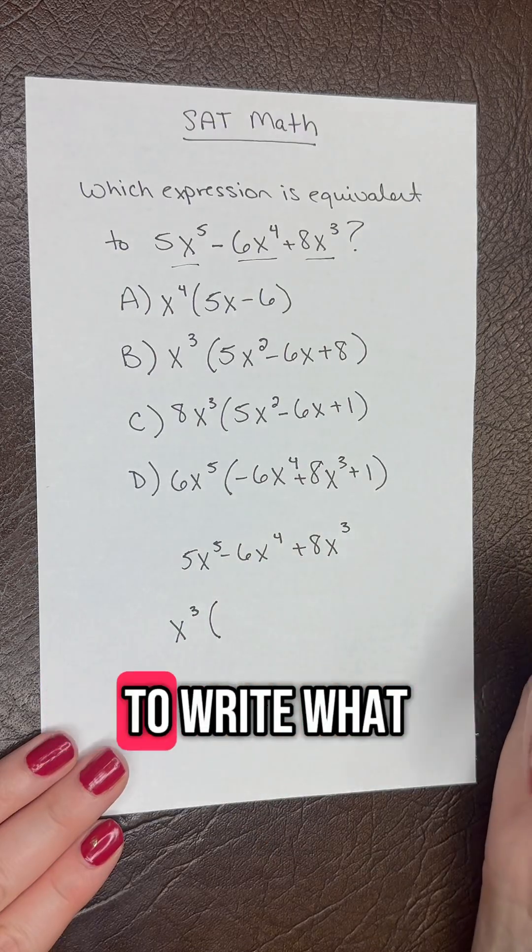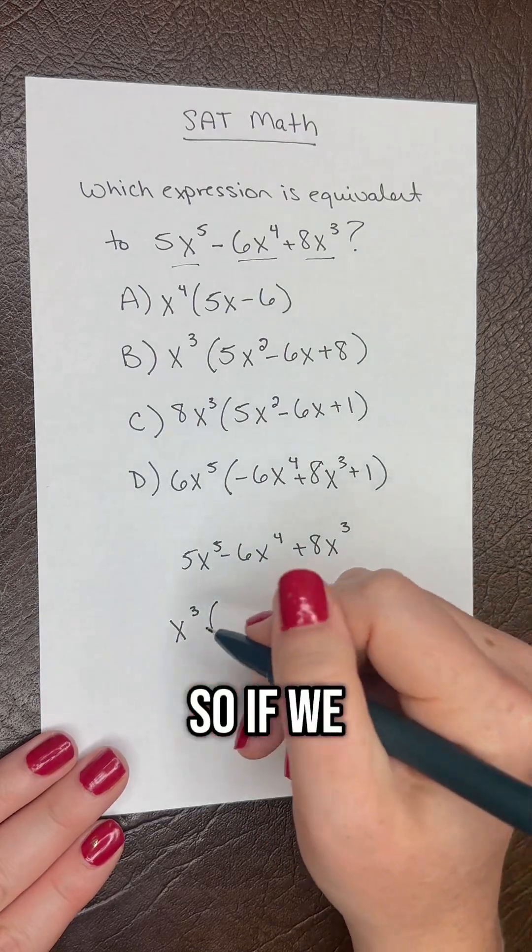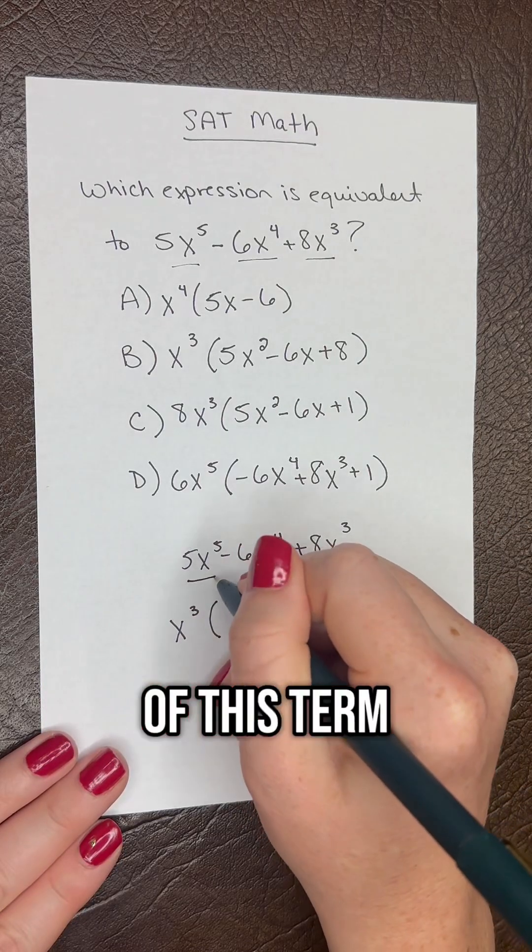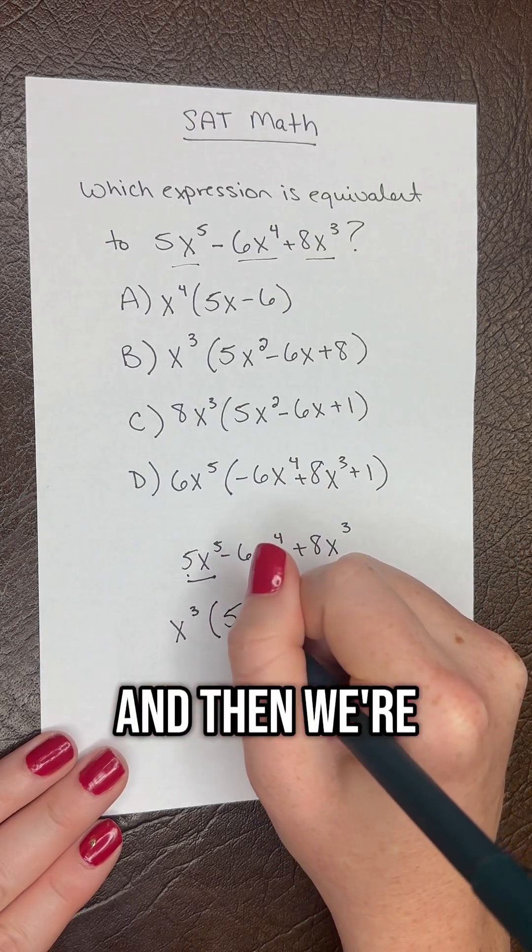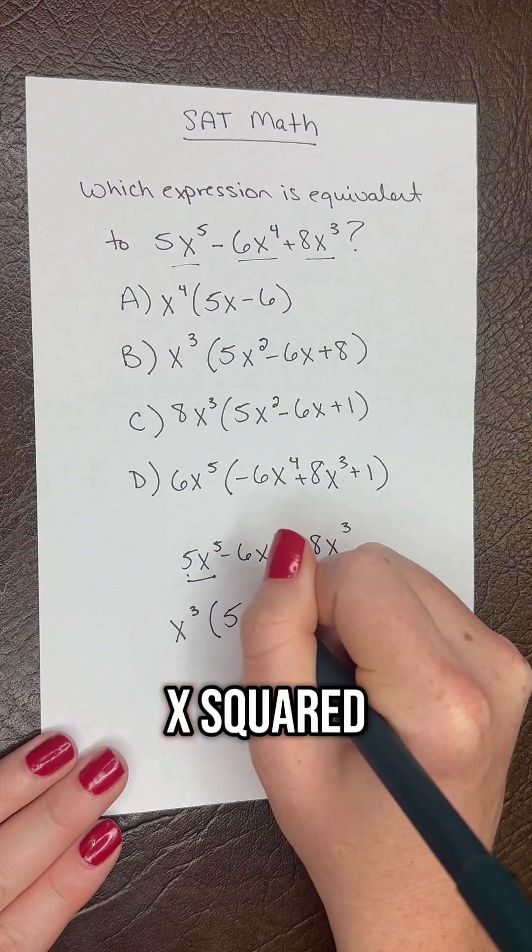Then in the brackets we're going to write what is left. So if we take x to the third out of this term, we're still going to have the five, so we're going to write that, and then we're still going to have x squared.